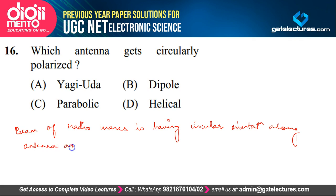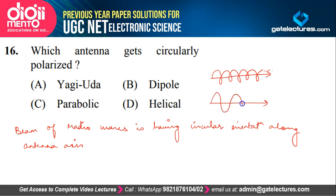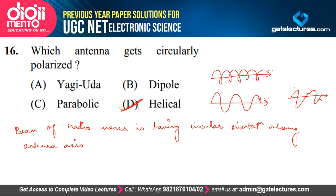In linear polarization, waves have a linear orientation — along the x-axis or y-axis. In circular polarization, the waves are oriented in a circular manner. If we draw a diagram with the antenna axis, in linear polarization waves go along one axis, whereas in circular polarization they spiral around the axis. Helical antenna uses this circular polarization.